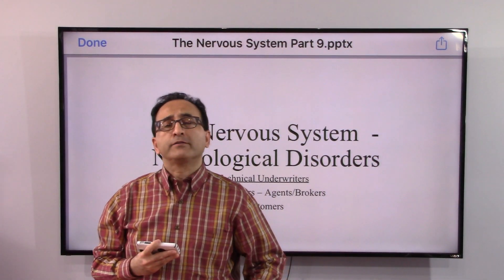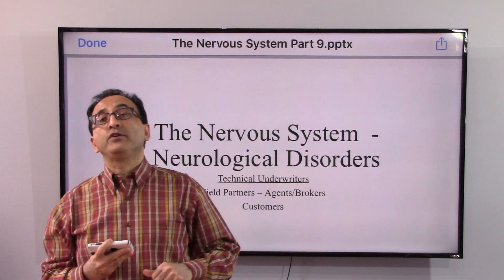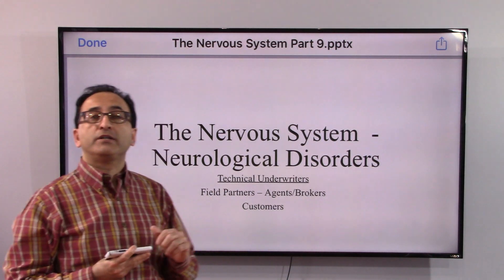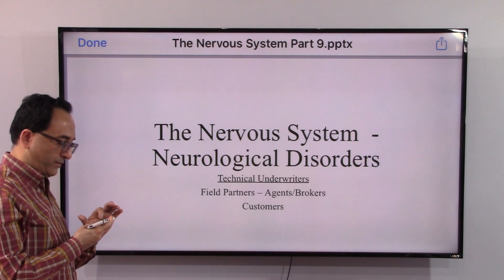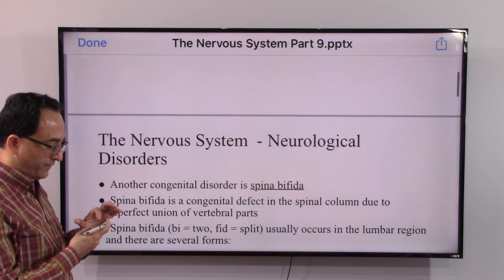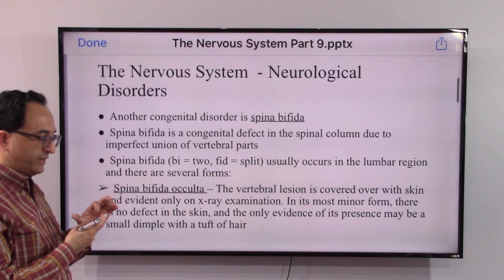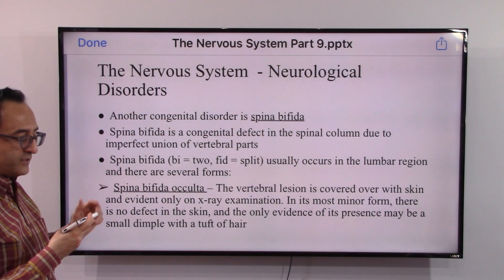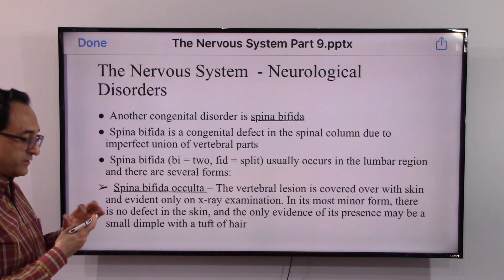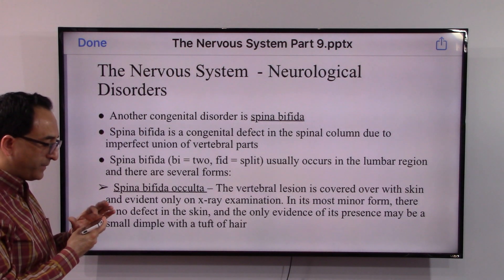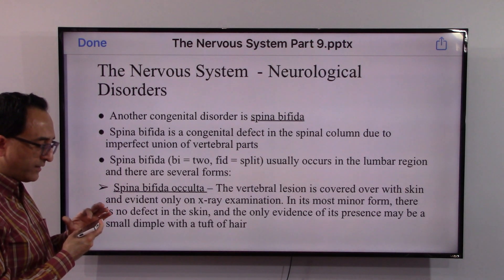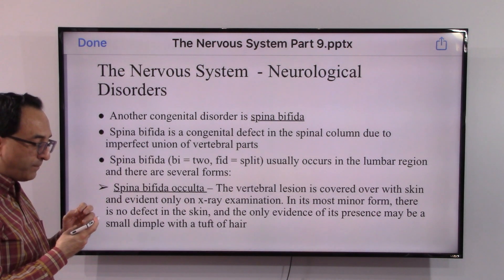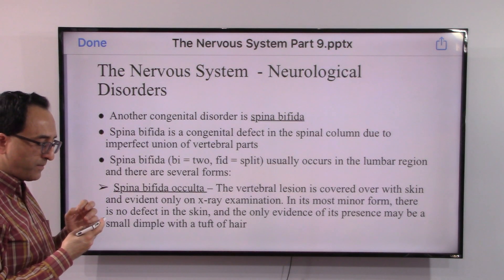Welcome back. In this video we will be taking a look at spina bifida, one of the neuro disorders. As some of us may already know, this is a congenital disorder. Spina bifida is a congenital defect in the spinal column due to imperfect union of vertebral parts.